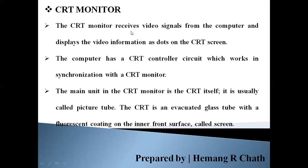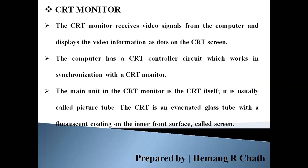The CRT monitor receives a video signal from the computer and displays the video information as dots on the CRT screen. The video signal comes from the video card attached to the CPU. This video information is then displayed as dots on the screen.